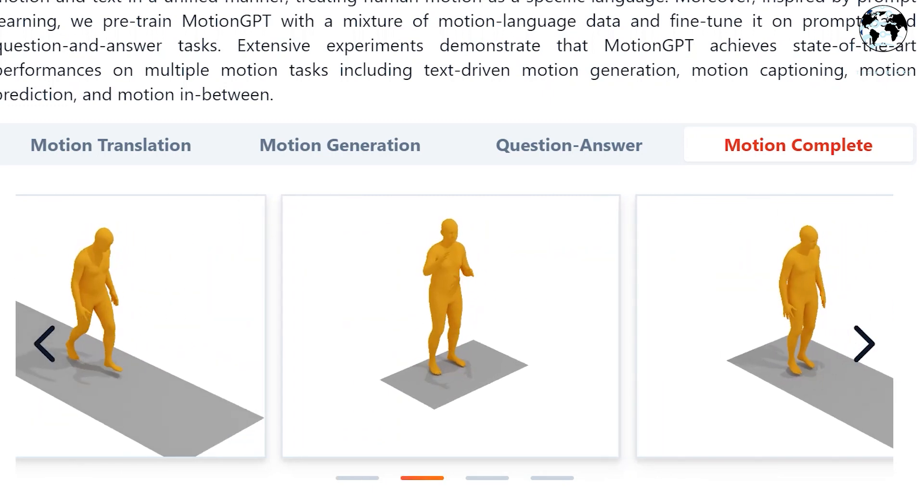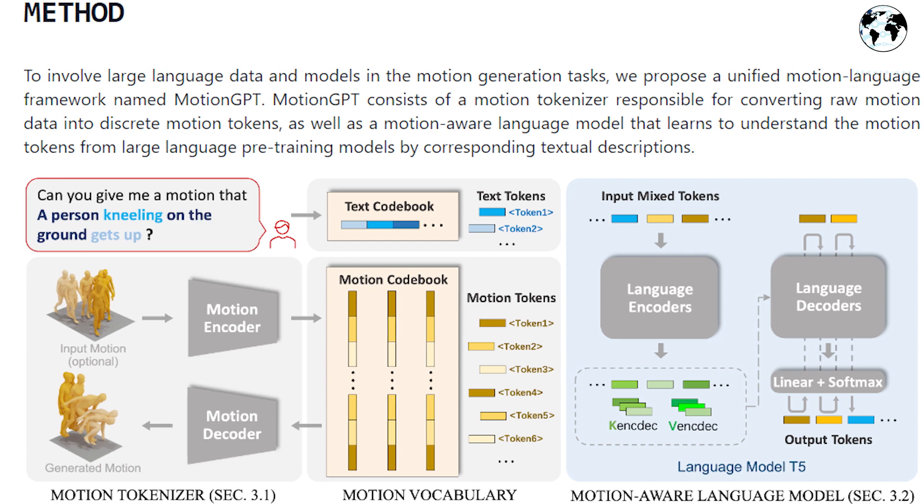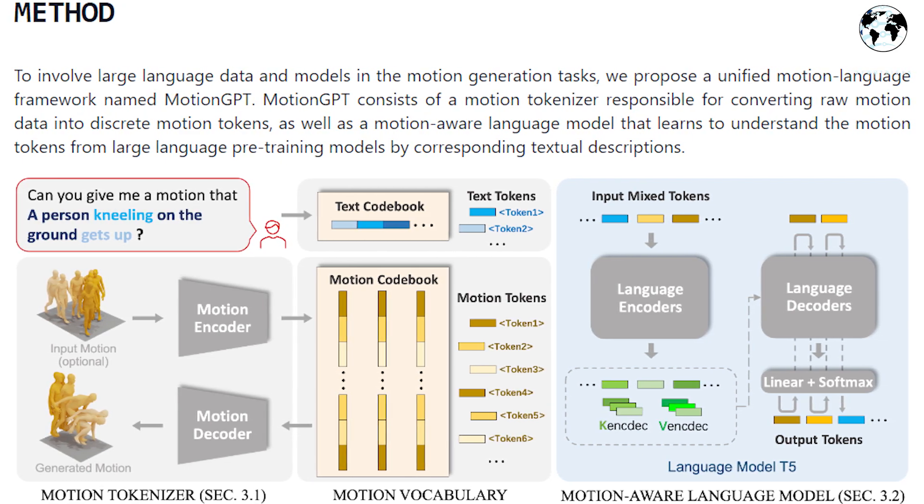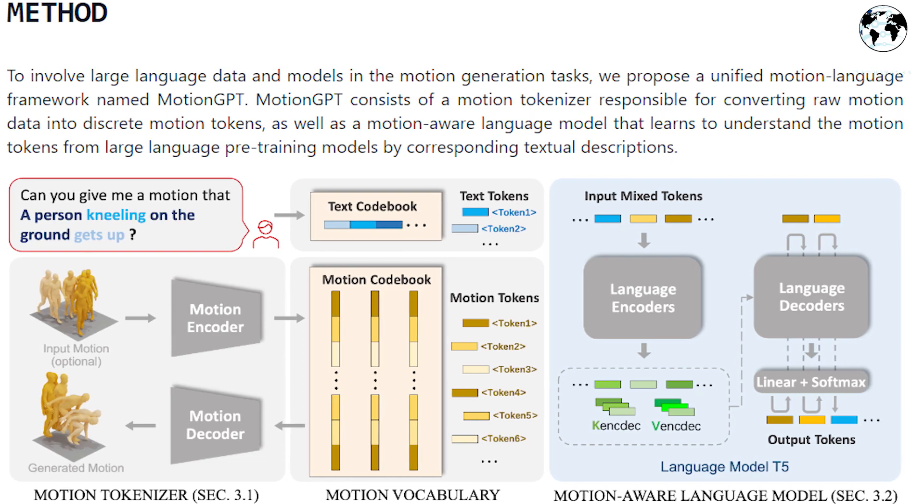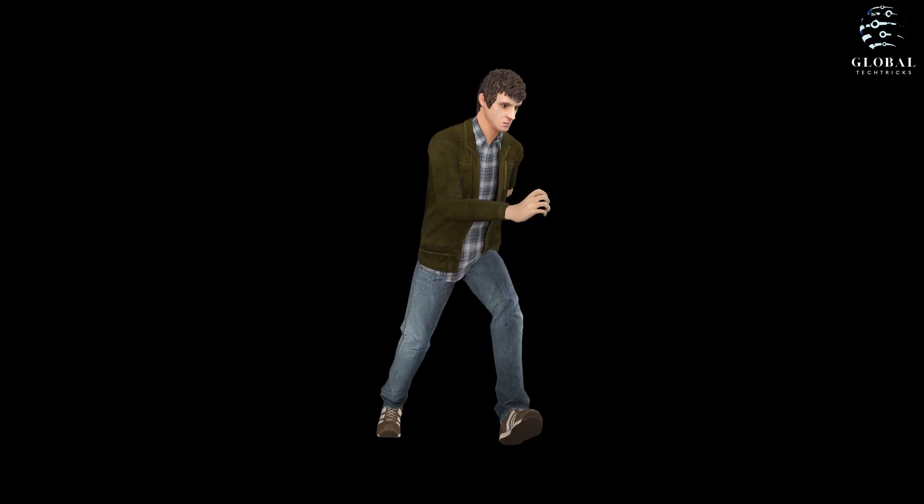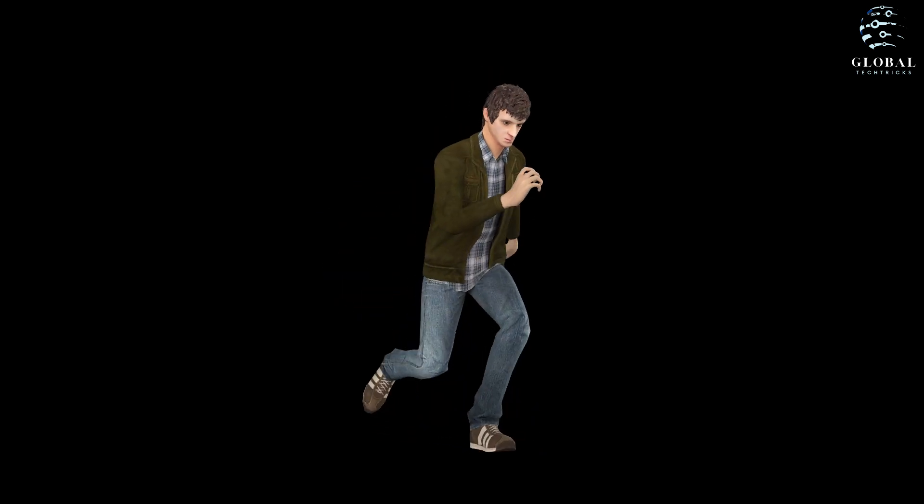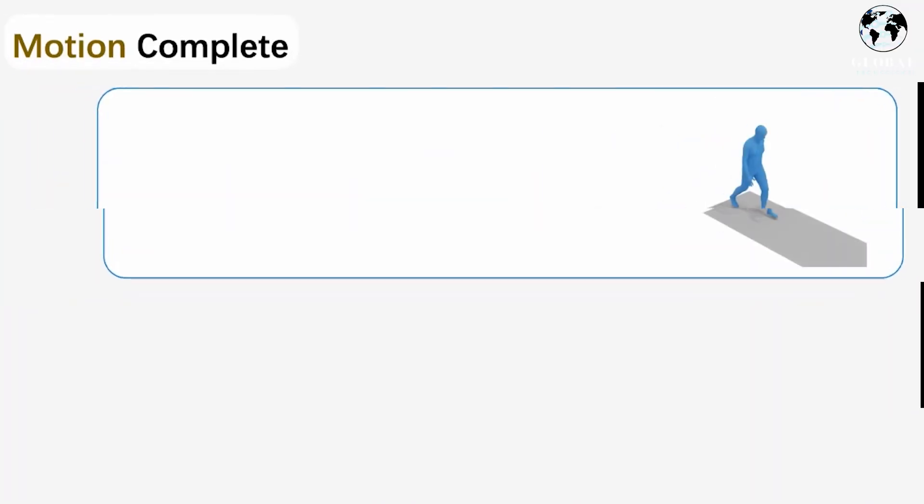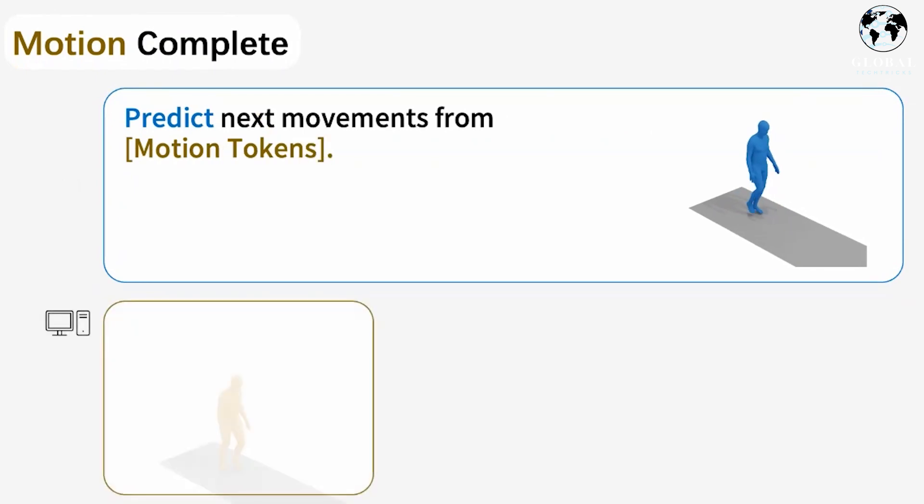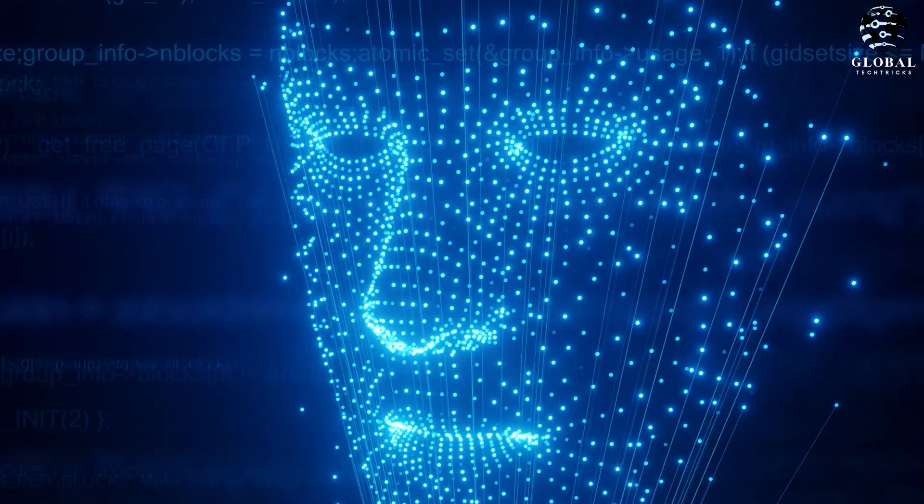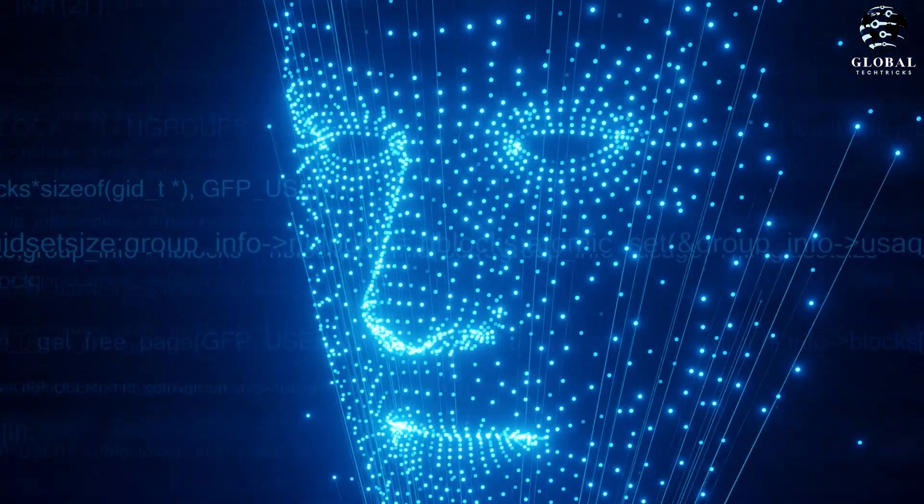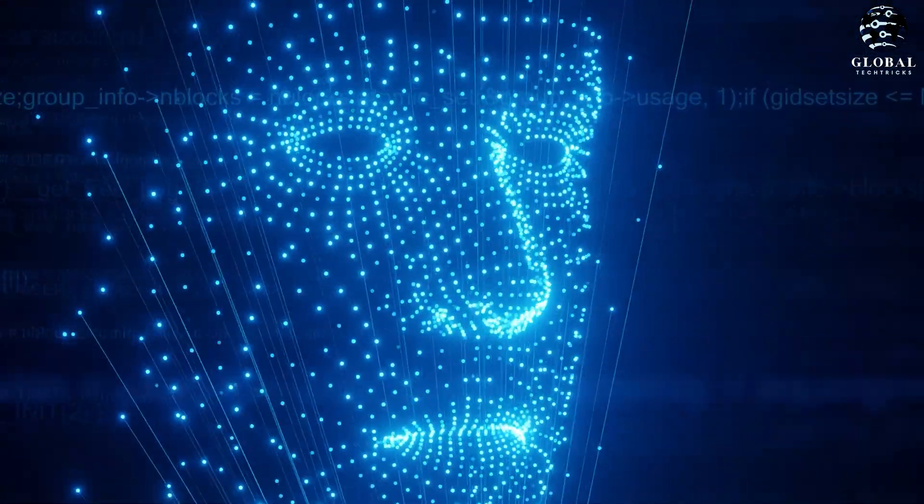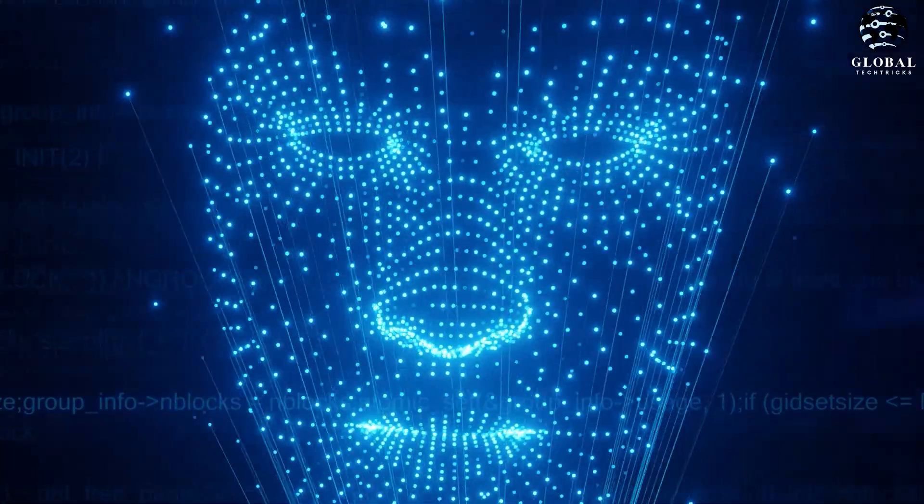Motivated by this insightful understanding, Motion GPT is proposed as a unified, versatile, and user-friendly motion language model capable of addressing multiple motion-related tasks. A key aspect of our approach involves leveraging discrete vector quantization to represent human motion and converting it into motion tokens, similar to how word tokens are generated. By building upon this motion vocabulary, Motion GPT performs language modeling on both motion and text in a unified manner, treating human motion as a distinct form of language.